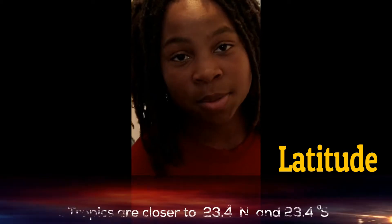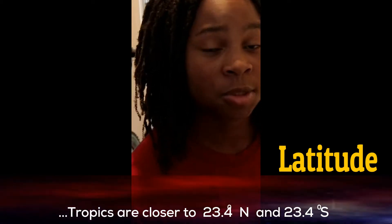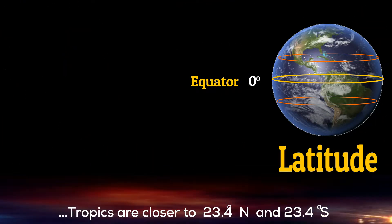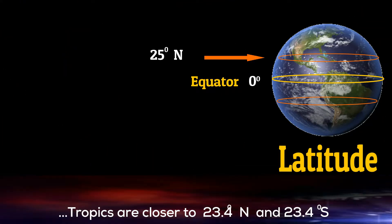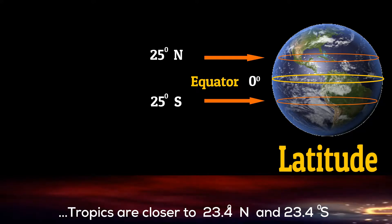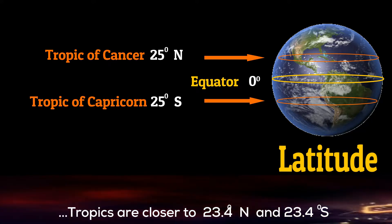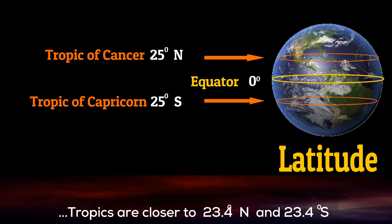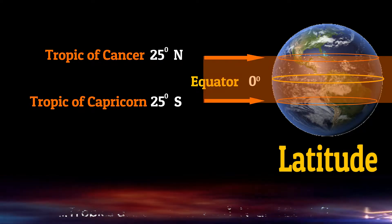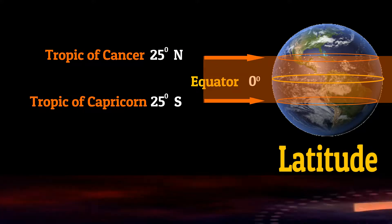The lines of latitude at 25 degrees north and 25 degrees south are special. At 25 degrees north and 25 degrees south, we have the Tropic of Cancer and Capricorn. This region of the Earth is called the tropics. They only experience two seasons — a wet season and a dry season.